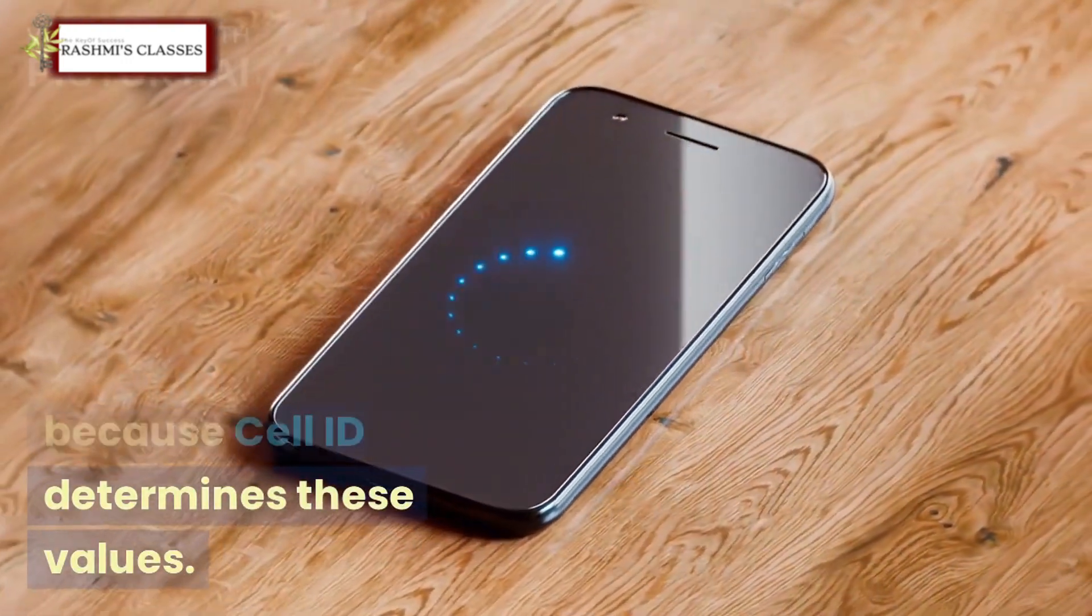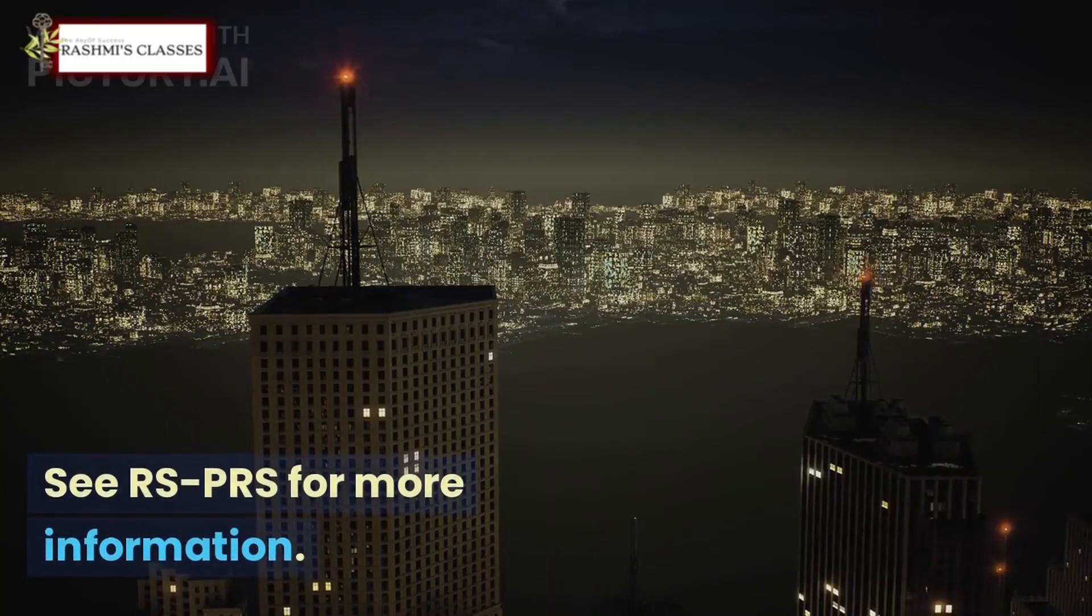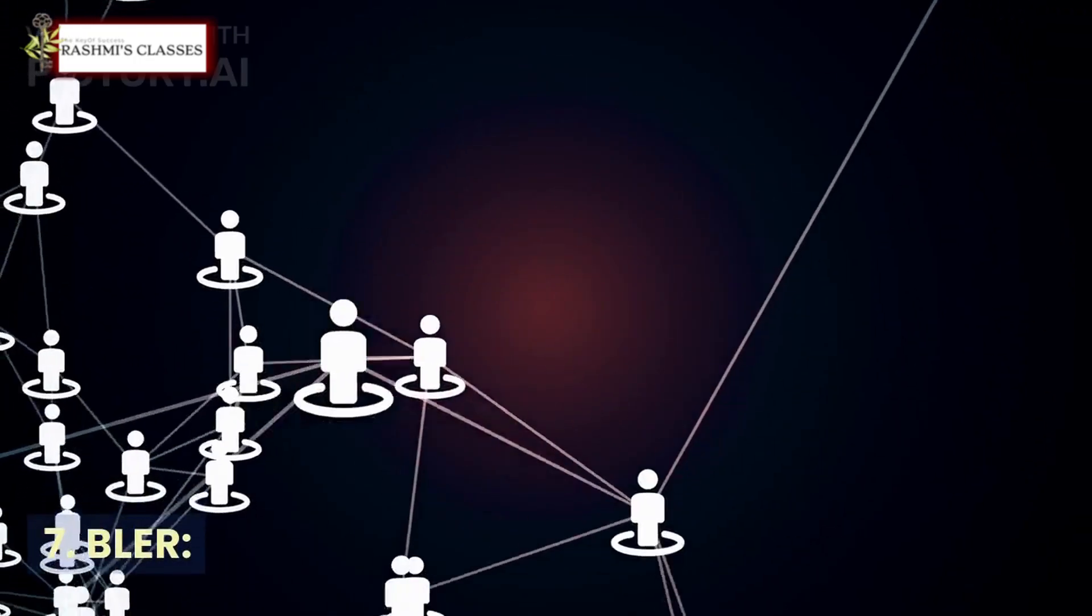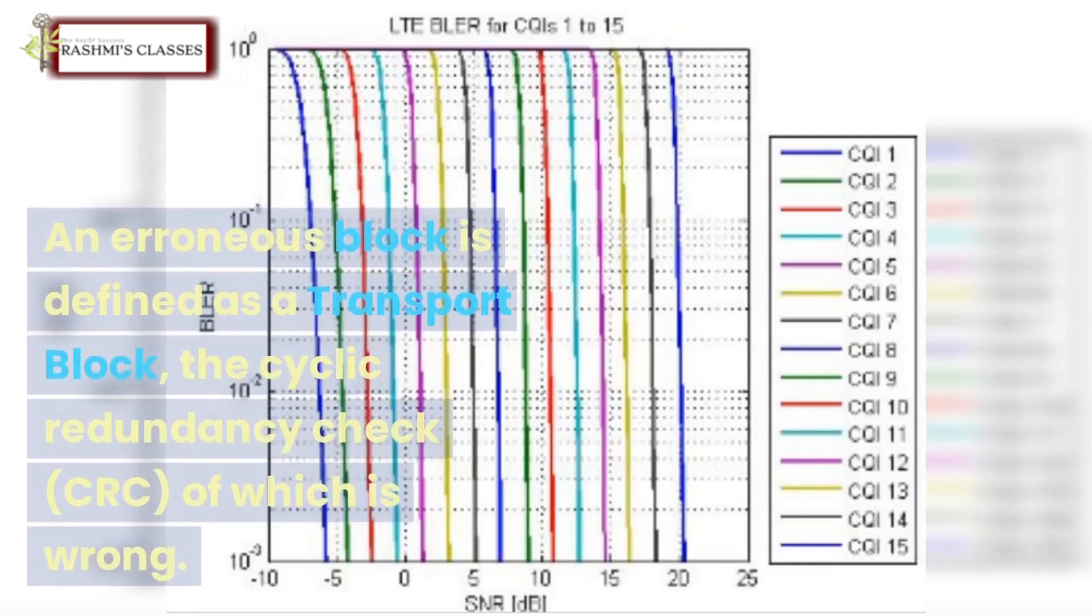7. BLER: 3GPP TS 34.121 defines Block Error Ratio (BLER) as follows: A block error ratio is defined as the ratio of the number of erroneous blocks received to the total number of blocks sent. An erroneous block is defined as a transport block whose Cyclic Redundancy Check (CRC) is wrong.